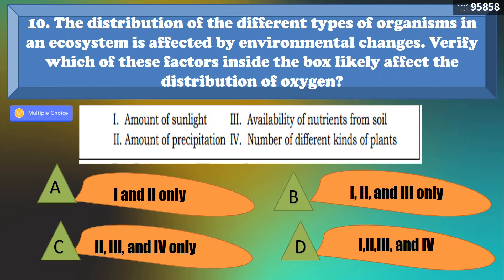And last, for number 10: the distribution of the different types of organisms in an ecosystem is affected by environmental changes. Verify which of these factors likely affects the distribution of organisms — is it 1) the amount of sunlight, 2) amount of precipitation, 3) availability of nutrients from soil, or 4) number of different kinds of plants? The correct answer is letter D — all of the above: 1, 2, 3, and 4.